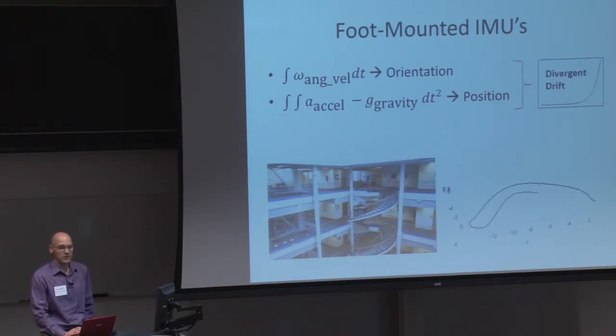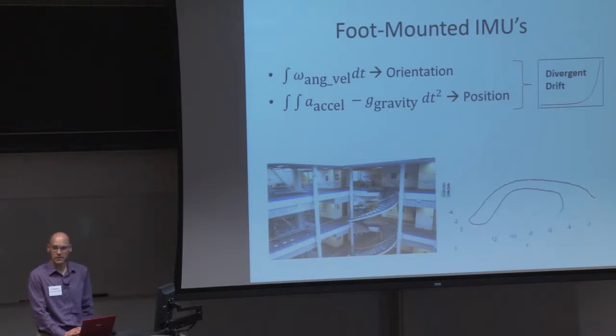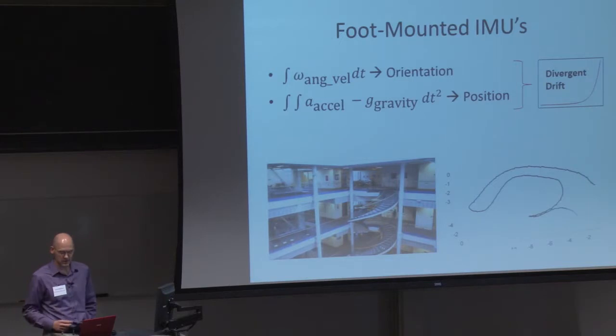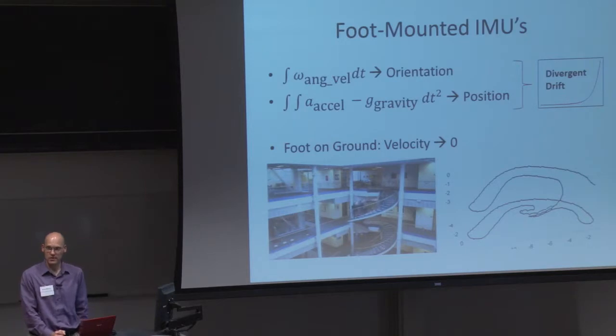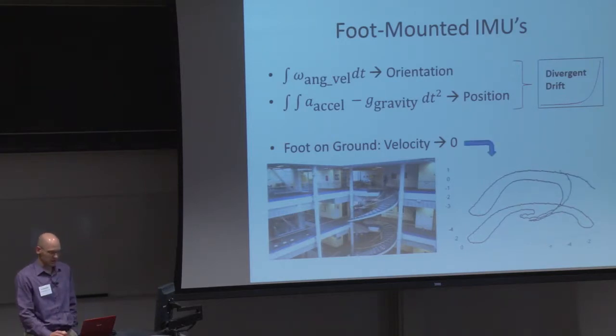So accelerometers and angular rate gyroscopes give you signals that should be integrable to find the actual position and orientation of an IMU. But, as many of you know, if you just do that directly, they're subject to divergent drift. And so you have to do various sensor fusion things to fix it. If you put it on the foot though, it's subject to a special condition that allows you to get rid of the divergent drift by noting that the foot, when it's on the ground, has a velocity of zero. And so then you get the ability to reproduce paths through space like John's right foot while he walked around in one of the academic buildings.